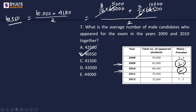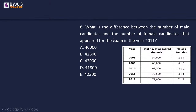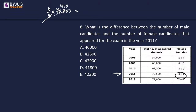Next: difference between male and female candidates in 2011. The ratio is male:female = 4:1, so total parts = 5. The difference is 3 parts out of 5. Total candidates in 2011 = 70,500. So 70,500 ÷ 5 = 14,100; difference = 14,100 × 3 = 42,300. Option E.